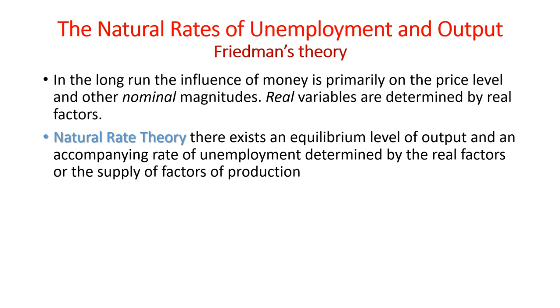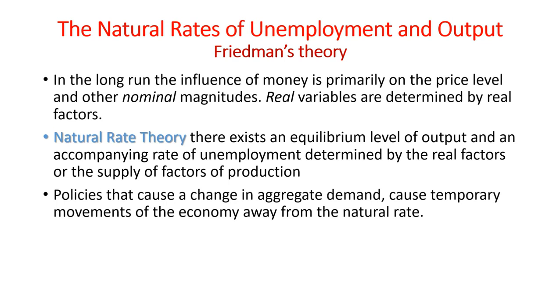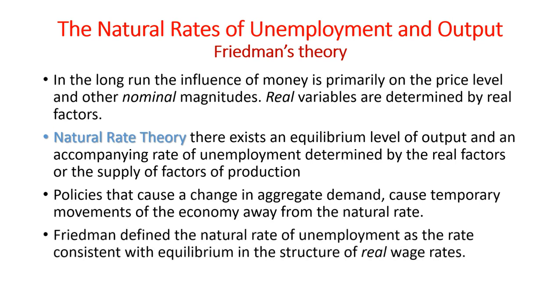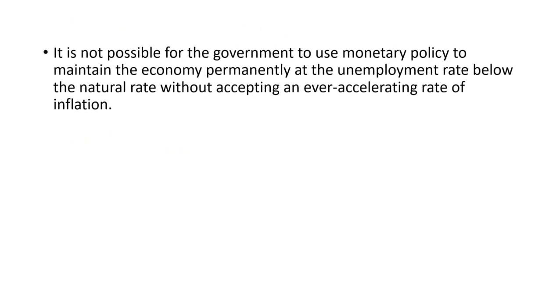Policies that cause a change in aggregate demand, such as monetary policy, cause temporary movements of the economy from the natural rate. Friedman defines the natural rate of unemployment as the rate which has the property that it is consistent with equilibrium in the structure of real wage rates. It is not possible for government to use monetary policy to maintain the economy permanently at the level of output above the natural rate or at the unemployment rate below the natural rate without accepting an ever-accelerating rate of inflation.